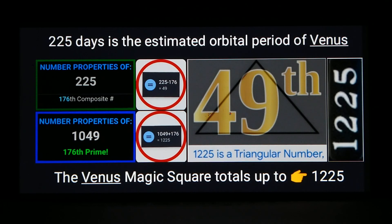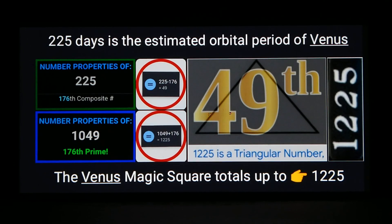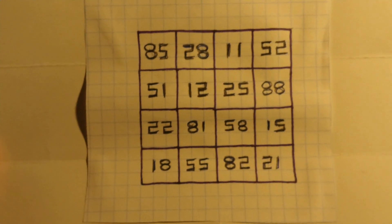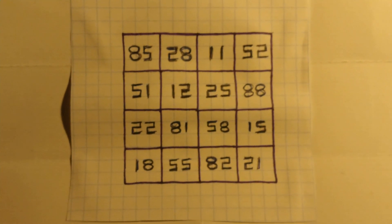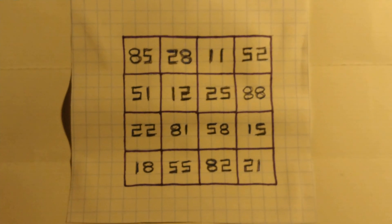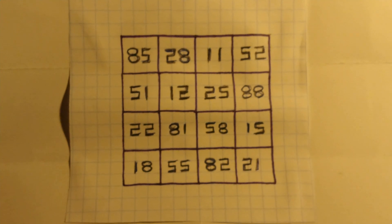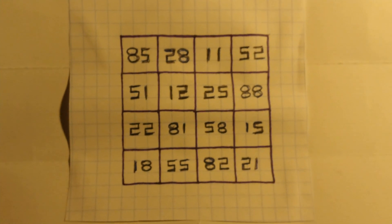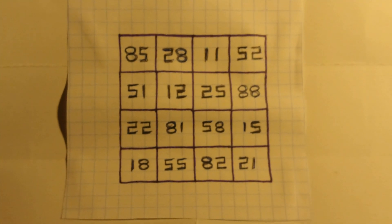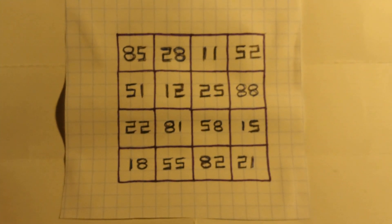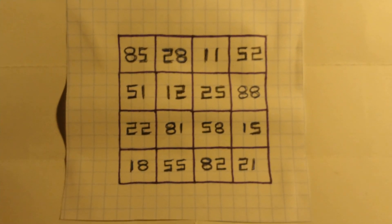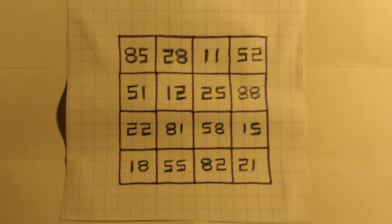I don't have a screenshot of the 176 magic square handy, but I do have a drawing of it — forgive the messy drawing. Shout out to William Sullivan for putting 1225 right in the middle there; I need to ask him if he did that on purpose. You see the top row: 85, 28, 11, 52 — add all those together and you get 176. Look at the bottom row: 18, 15...